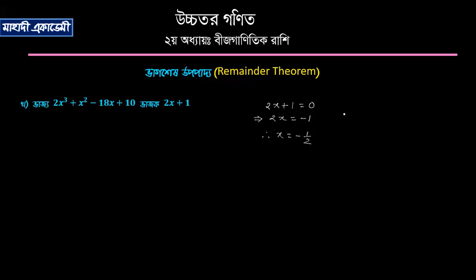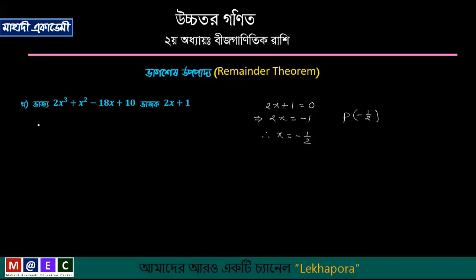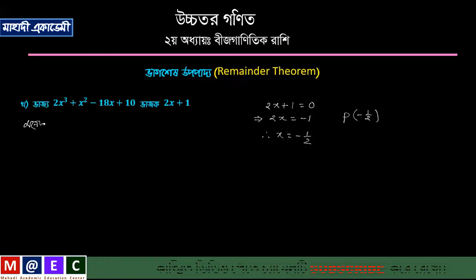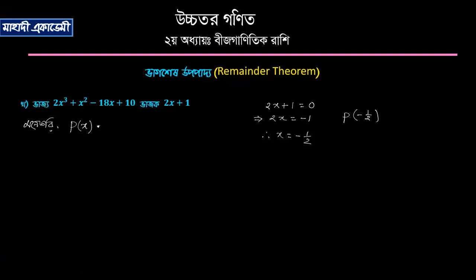Then the answer is p of minus half. I have said p is equal to the same. So the answer is — we will continue to discuss this — p of x equal to 2x cubed plus x squared minus 18x plus 10.